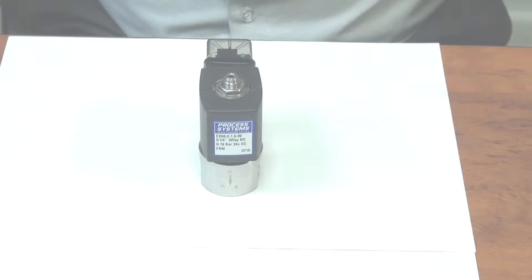The ES58 solenoid valve is a three-way normally open valve suitable for applications where you want to pass a signal through when there's no power on it. It's a normally open function. When it's energized, it cuts that signal off.